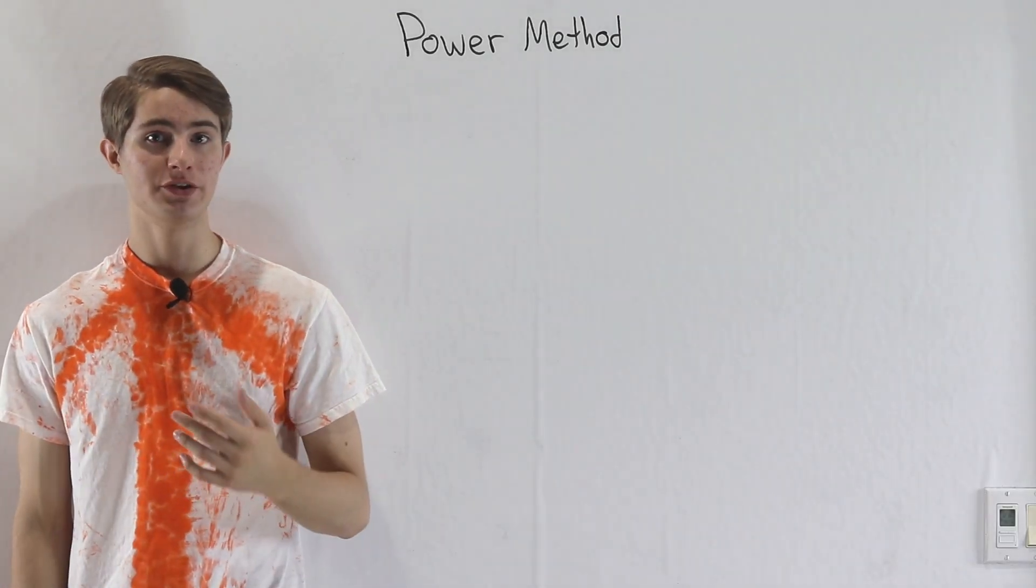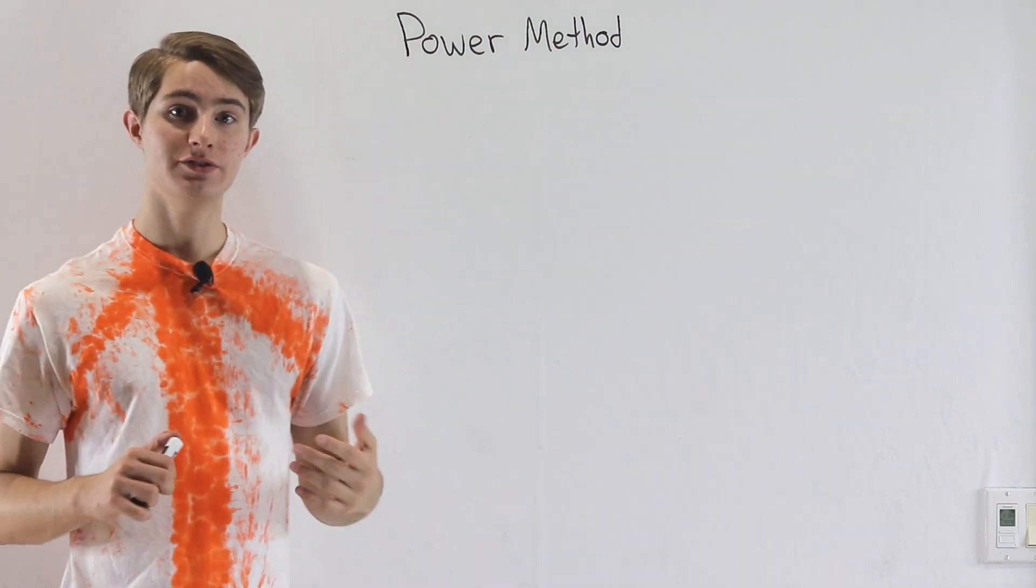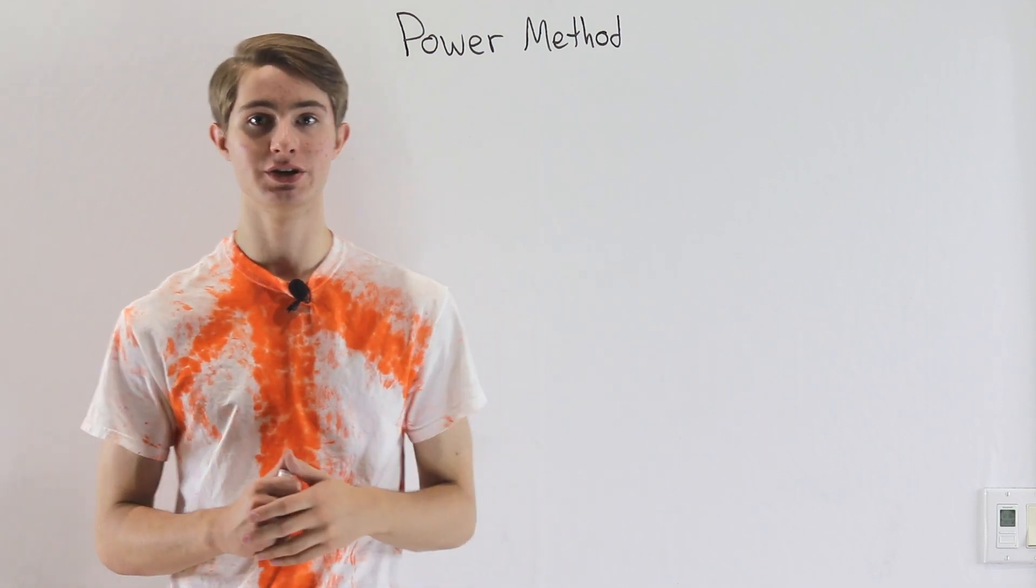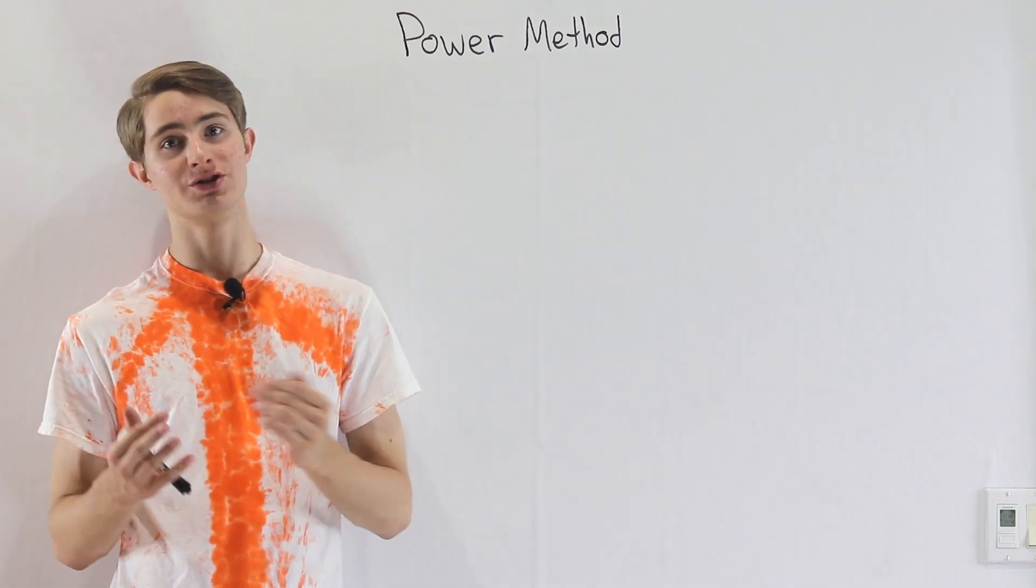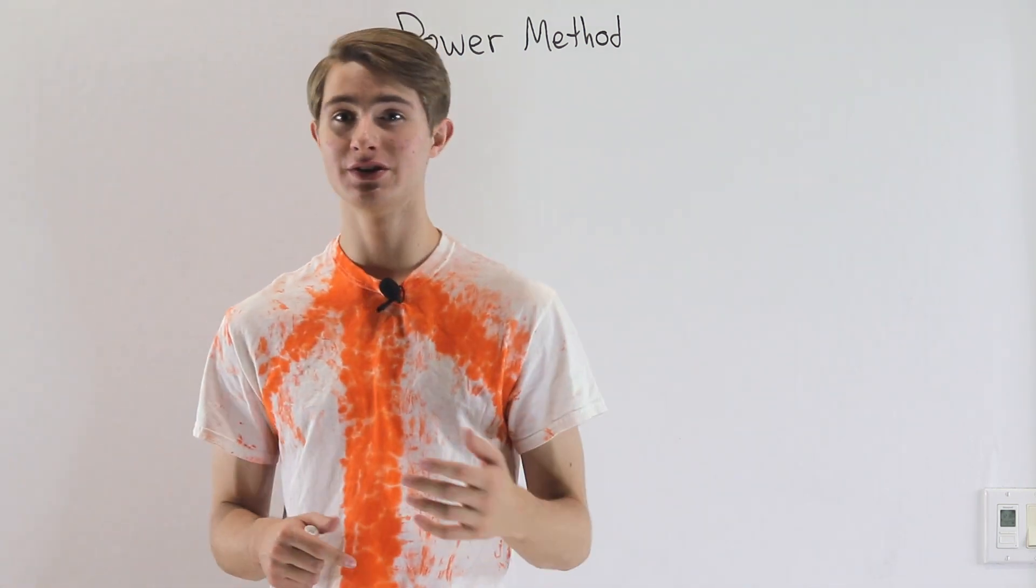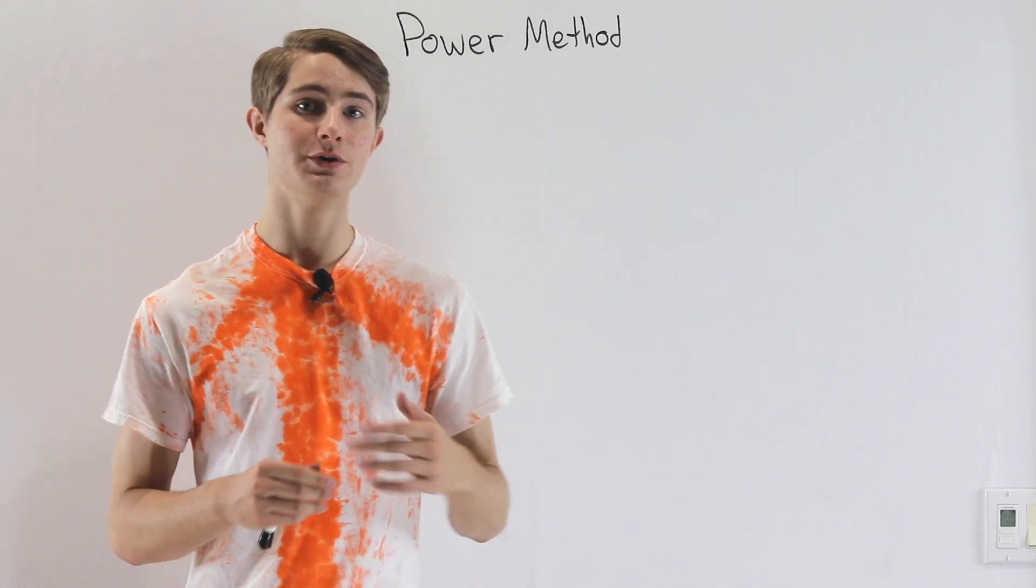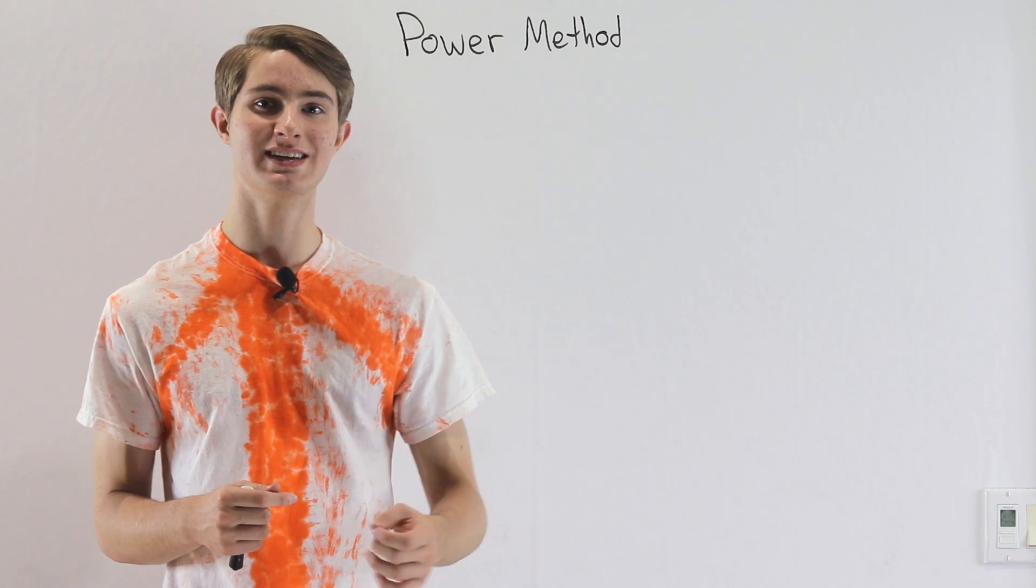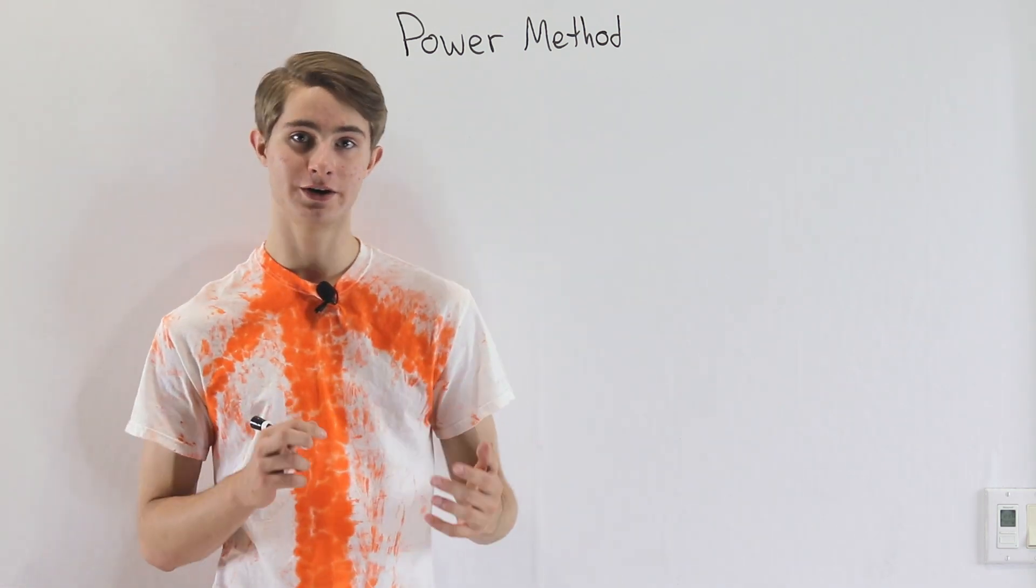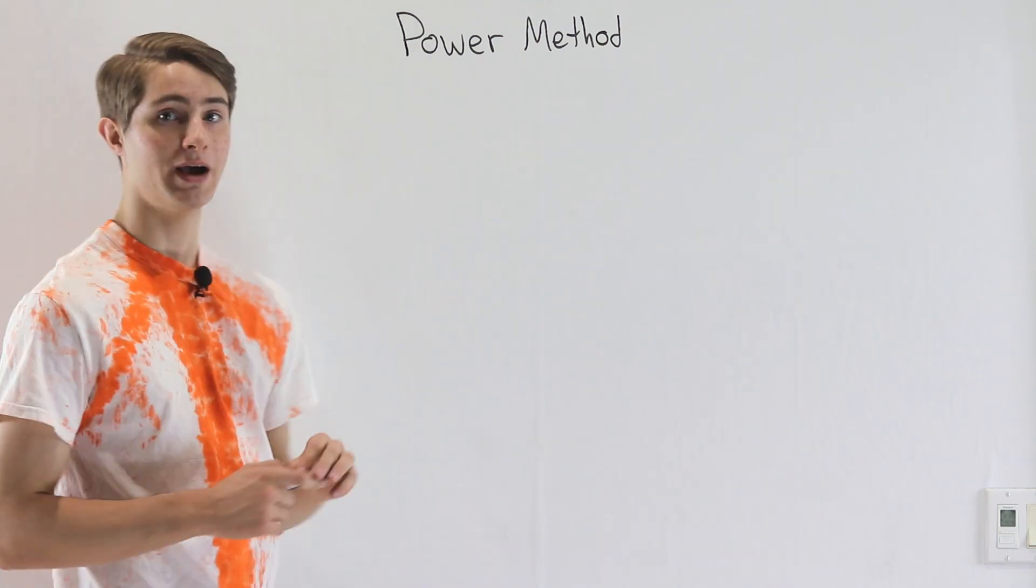We're going to talk about the power method for computing eigenvalues and eigenvectors. In the last video, we talked about a direct approach for figuring out the eigenvalues of a matrix. But in that case, we were looking at a 2 by 2 matrix, which is the baby case. If we want to use eigenvalues in real world applications, a lot of times we're looking at things like 200 by 200 matrices. If we want to find the eigenvalues directly, that's going to take a lot of time and computation. So sometimes it's better to know numerical methods for computing approximations for eigenvalues, and that's what the power method is.